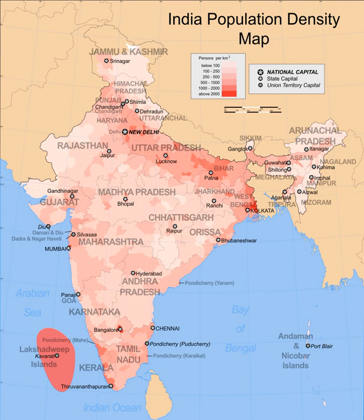India occupies 2.41% of the world's land area but supports over 18% of the world's population. At the 2001 census, 72.2% of the population lived in about 638,000 villages and the remaining 27.8% lived in more than 5,100 towns and over 380 urban agglomerations. India's population exceeded that of the entire continent of Africa by 200 million people in 2010. However, because Africa's population growth is nearly double that of India, it is expected to surpass both China and India by 2025.